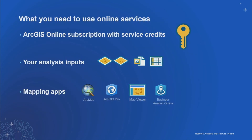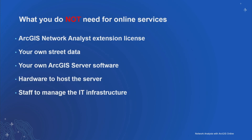What do you need to use these services? You need an ArcGIS Online subscription along with service credits, your analysis input such as stops, facilities, origins or destinations, and some kind of app like ArcGIS Pro, ArcMap, Map Viewer, Business Analyst Online, or ArcGIS Insights. Users often ask if they need a Network Analyst extension license — the answer is no. You only need service credits and a subscription.